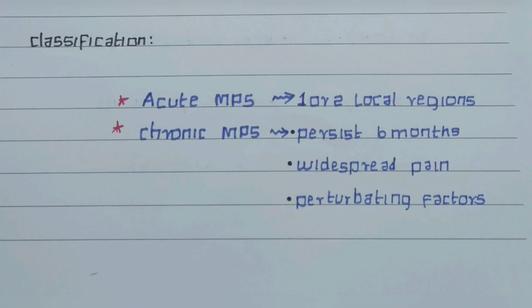Classification: there are two types — acute MPS and chronic myofascial pain syndrome. Acute MPS is involved only in one or two local regions and lasts for a limited duration of time. Chronic MPS persists for more than six months, involves widespread pain, and the pain may last from a few days to several weeks.